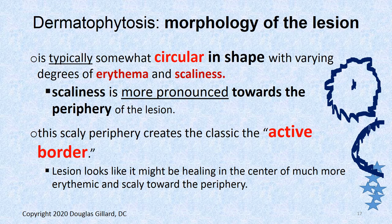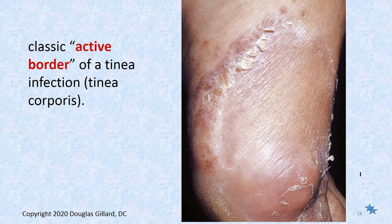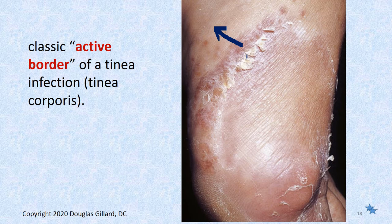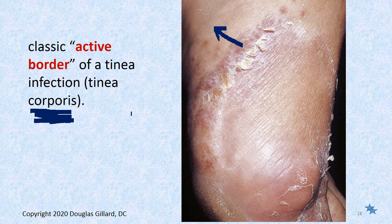This is the active border, and it can grow bigger and bigger. There's a classic active border — the skin looks pretty normal in the center, but the border is advancing. T. rubrum is living right at that border. This is called tinea corporis, which is if you get a ringworm infection anywhere on most of the body. The scalp has a special name, the eyebrows have a special name, but most of the body — corpus means body — is tinea corporis.